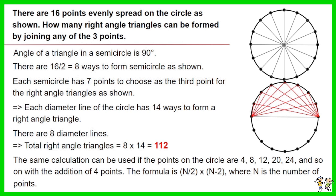The same calculation can be used if the points on the circle are 4, 8, 12, 20, 24, and so on — with the addition of 4 points. The formula is: n divided by 2, times the result of n minus 2, where n is the number of points.